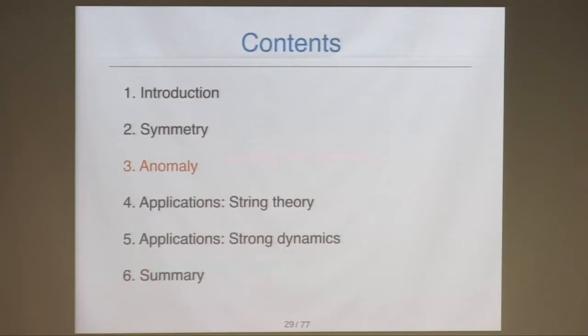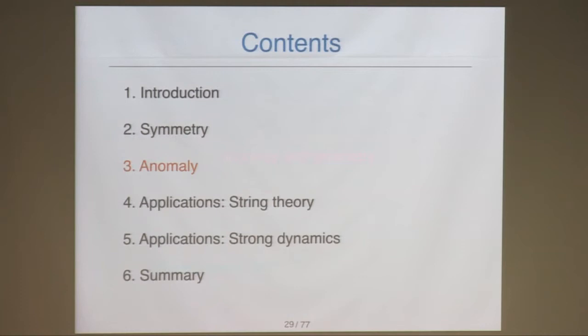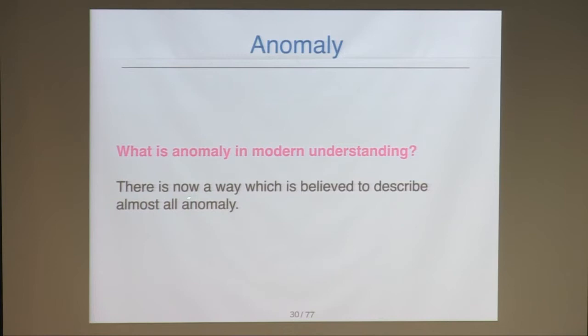This concludes the overview of symmetry. Now I want to discuss anomalies from the modern understanding. What is anomaly in modern understanding? There is now a way believed to describe almost all anomalies — here 'almost' means I don't know how to treat conformal anomaly in this framework. But except for conformal anomaly, I believe we can treat all anomalies in a very unified way.